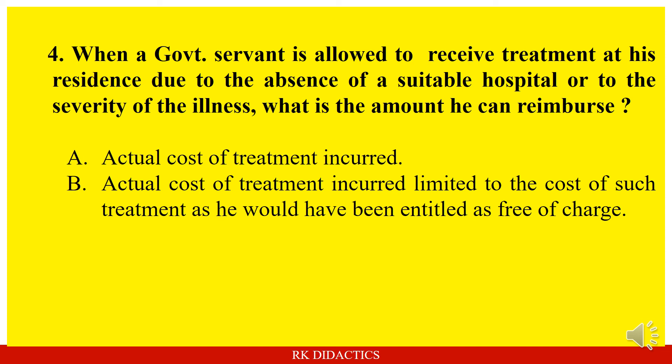Question: When a government servant is allowed to receive treatment at his residence due to the absence of suitable hospital or the severity of the illness, what is the amount he can reimburse? Option A: actual cost of treatment. Option B: actual cost of treatment limited to the cost of such treatment as he would have been entitled to free of charge. Answer is B.